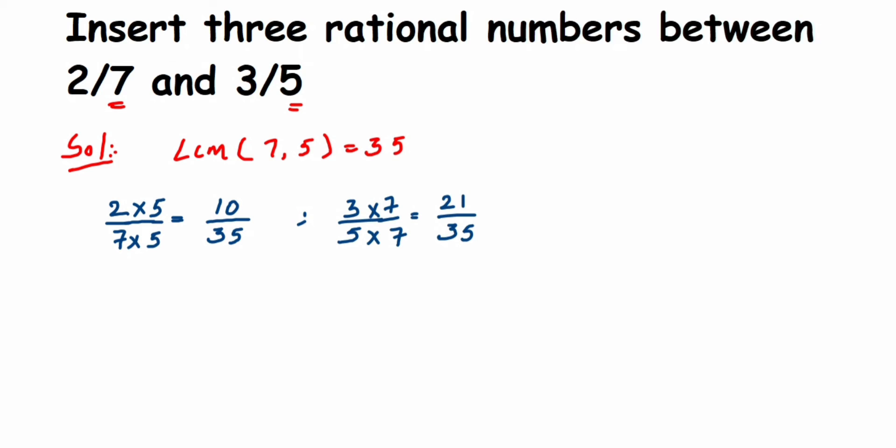Here you can see we have the same denominator, 35 and 35. The numerators are 10 and 21, so between 10 and 21 we have many numbers like 11, 12, 13 and so on up to 20. You can pick any three rational numbers you want.